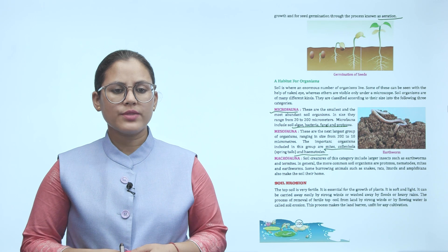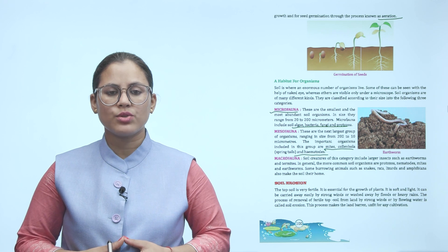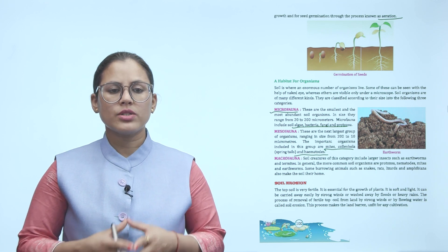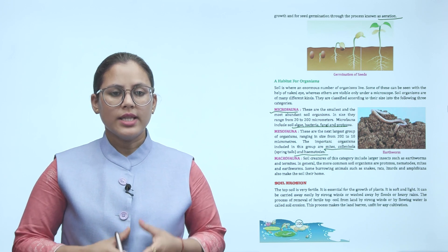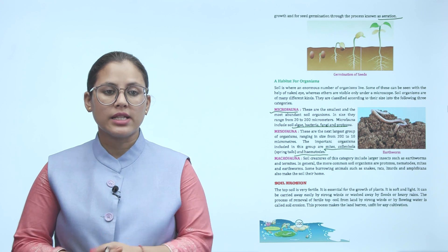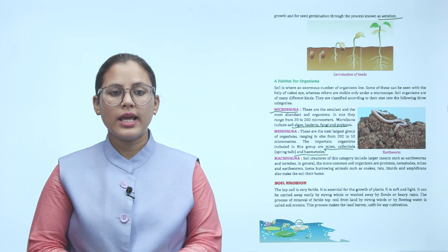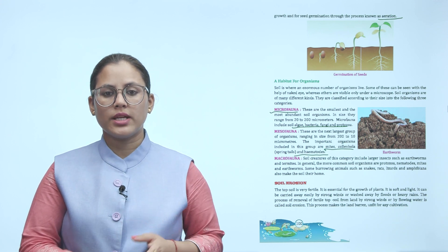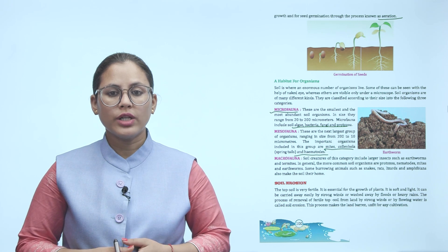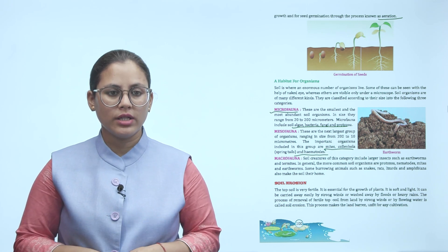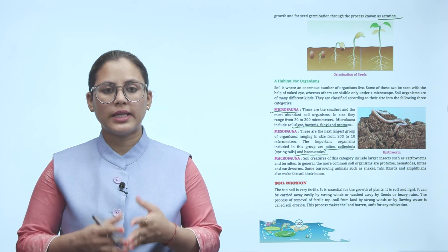Soil erosion: The topsoil is very fertile and essential for the growth of plants. It is soft and light, and can be carried away easily by strong winds or washed away by floods or heavy rains. The process of removal of fertile topsoil from land by strong winds or by flowing water is called soil erosion. This process makes the land barren and unfit for any cultivation.